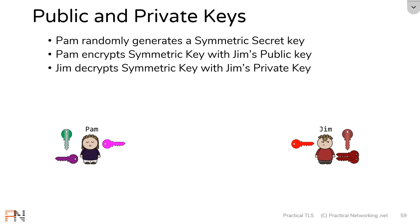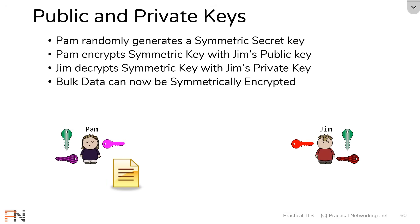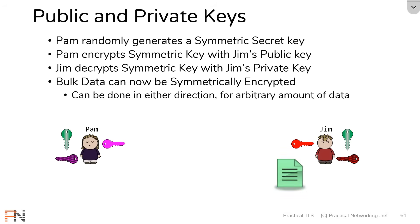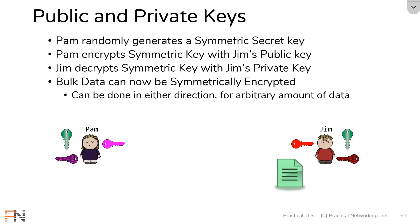Jim then uses his private key to decrypt the content of that message and extract the original symmetric secret key. Now both parties have established an identical symmetric key in a secure way, and can use that symmetric key to protect bulk data. Pam encrypts a message with her symmetric key — the only key that can decrypt it is the same symmetric key — and sends it across the wire. Jim uses his copy of the symmetric key to decrypt and extract the original content. This works in either direction for an arbitrary amount of data.